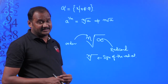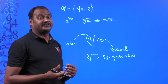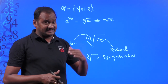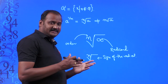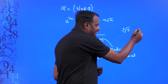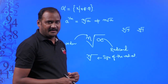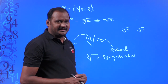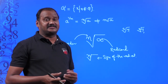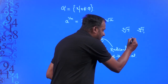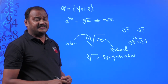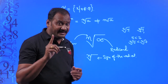We can understand every single radical by its order, index, and radicand. When comparing radicals, it is easy to decide which is greater and which is smaller. For example, given two radicals of the same order — third root 5 and third root 7 — since their order is the same, we simply compare the radicands. Since 5 is smaller than 7, we can say third root 5 is smaller than third root 7. So it is very easy to identify which radical is smaller or greater when they are of the same order.